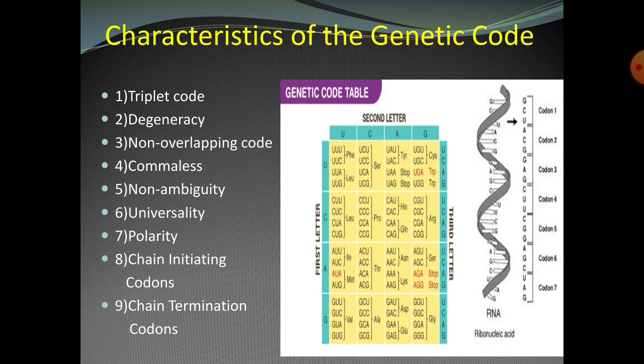Next, the characteristics of the genetic codon. The characteristics describe the nature of these codon molecules. Basically, these four base pairs interact in specific combinations to form the 64 codons.